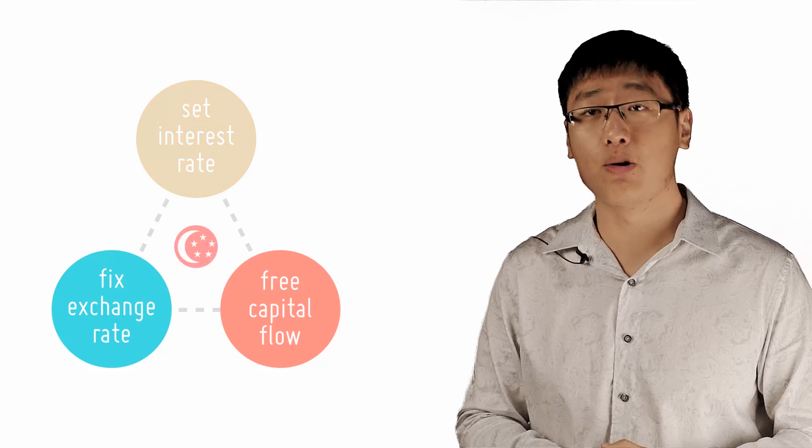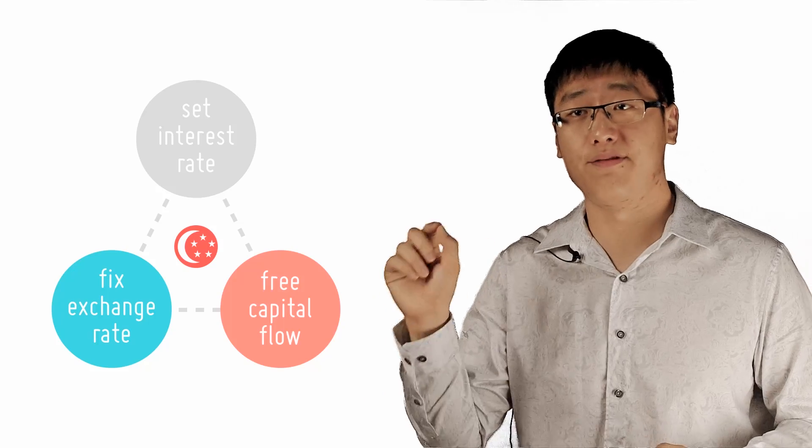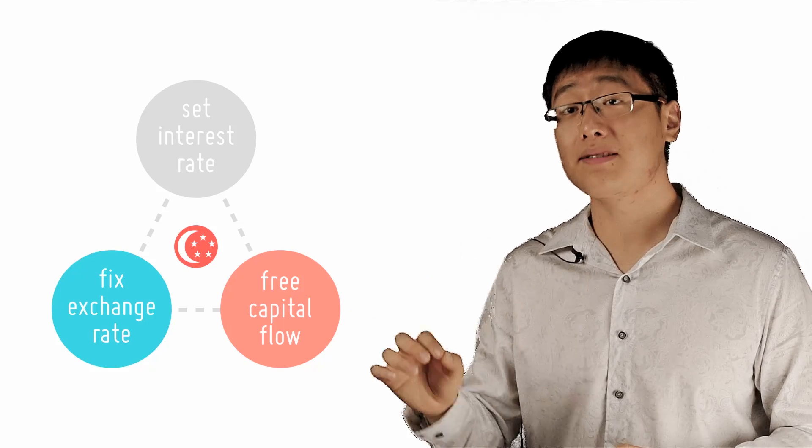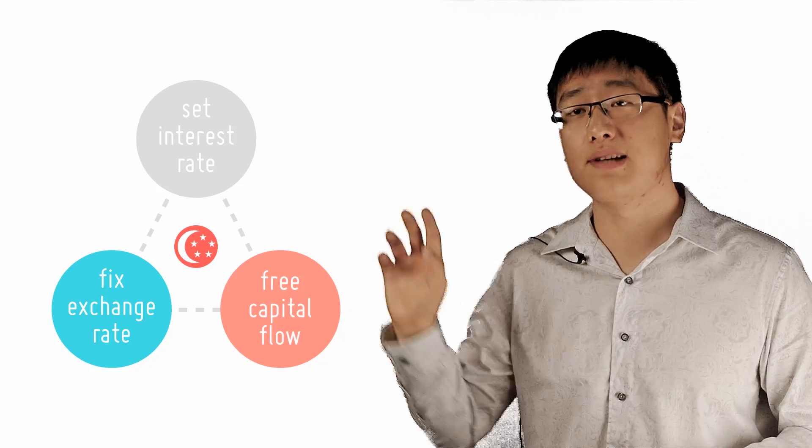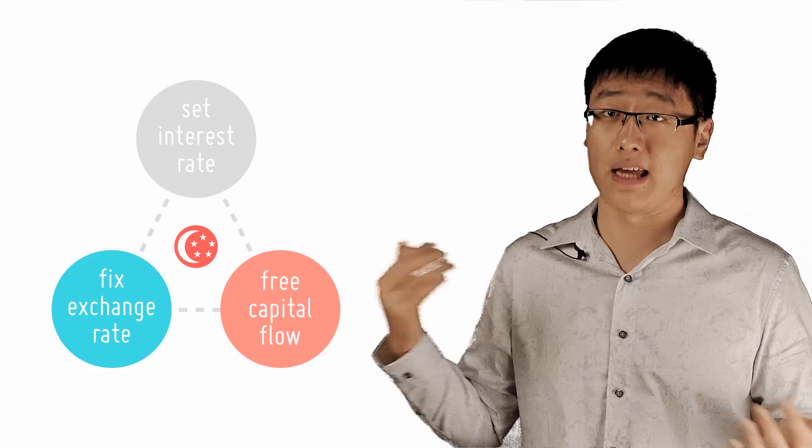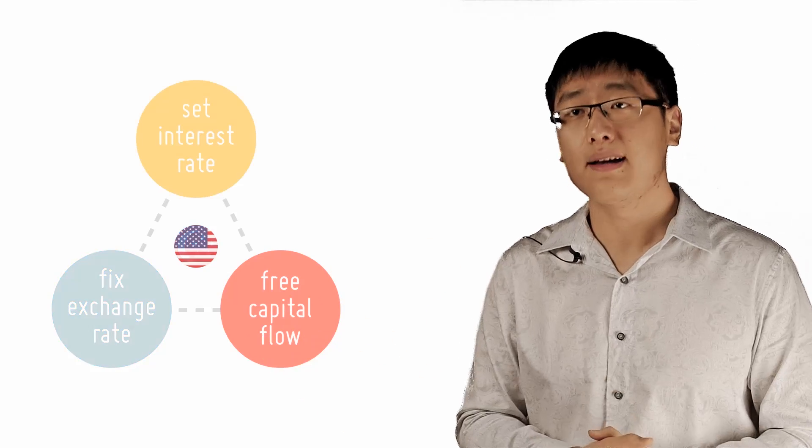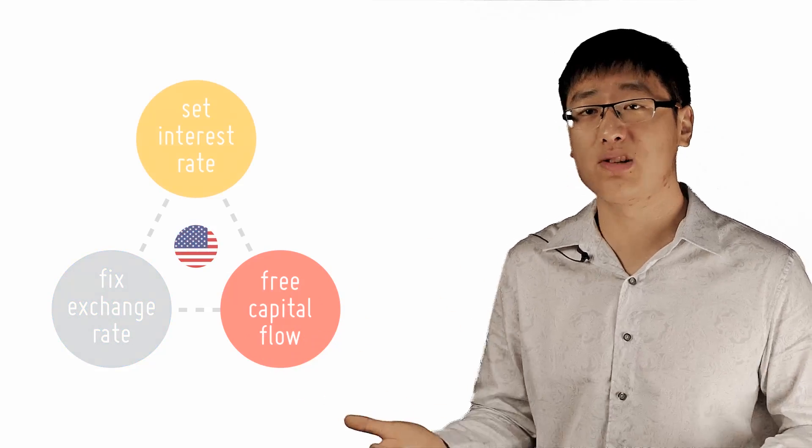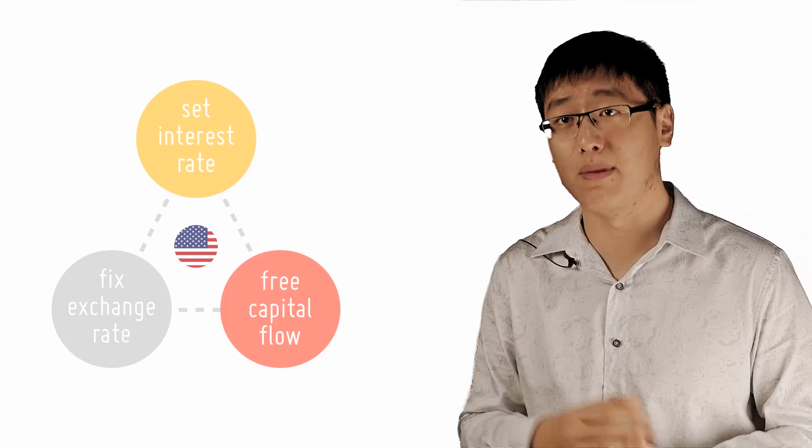For example, Singapore has chosen to have free capital movement and fixed exchange rates. It must necessarily give up the ability to set its own interest rate, hence monetary policy. The US chooses free capital movement and the ability to set its own interest rate, and hence its exchange rate must be free-floating.